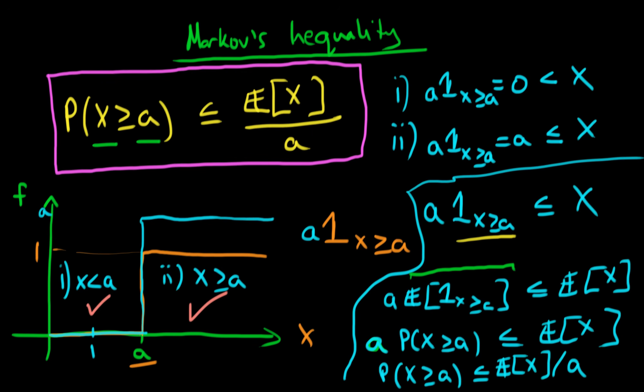And that is identical to what we had at the top — we have just gone ahead and proven Markov's inequality. In the next video, we are going to apply Markov's inequality to prove Chebyshev's inequality, and in the video after that, we're going to apply Chebyshev's inequality to prove the law of large numbers. I'll see you then.